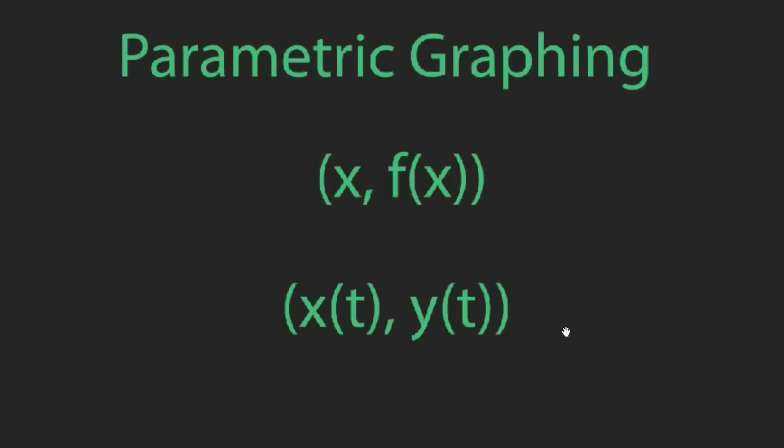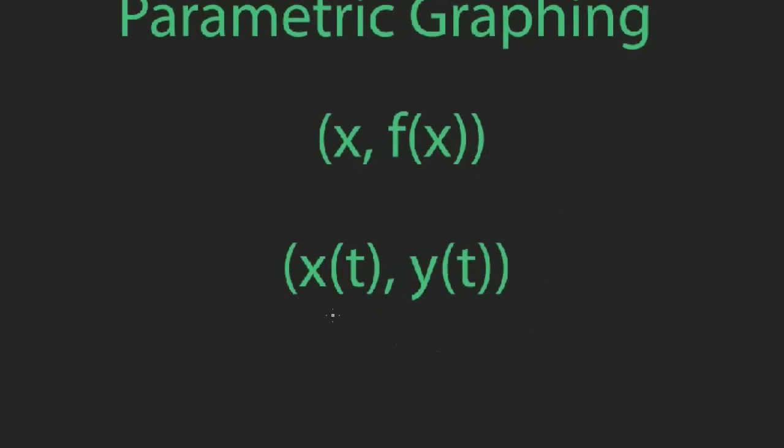Instead of thinking about just one function, you provide two functions: one function for x and one function for y, both based on a third variable called t. So this function describes my horizontal motion and this y function describes my vertical motion.